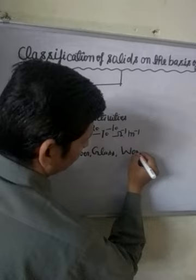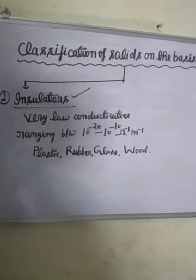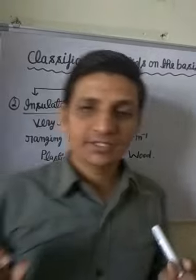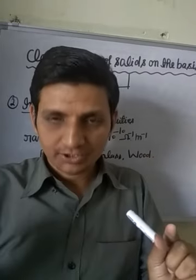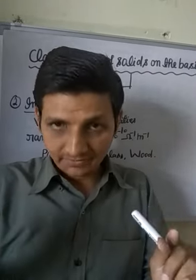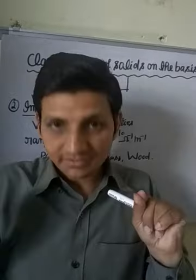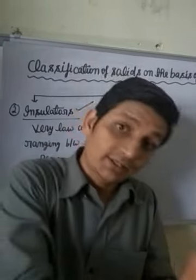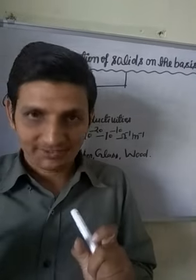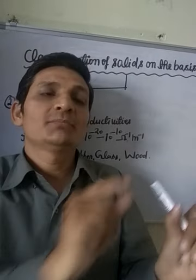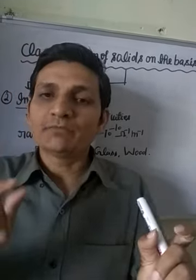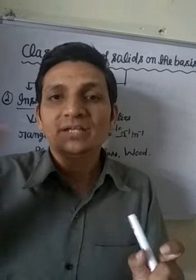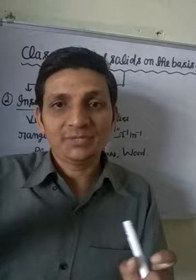Okay students, insulators — clear. After this, the next point is semiconductors. Solids which have conductivity in an intermediate range — intermediate means between conductors and insulators — ranging from 10 to the power minus 6 to 10 to the power 4 ohm inverse meter inverse are called semiconductors. Examples are silicon, germanium, etc.